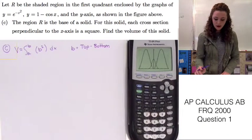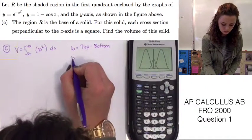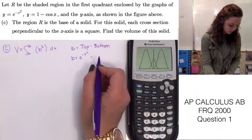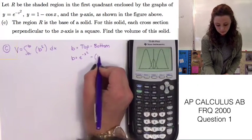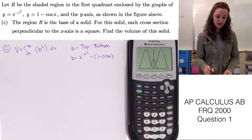By looking at the graph, we can see that the top is, again, e to the negative x squared. So B is going to be e to the negative x squared. And the bottom function will be 1 minus cosine x. So we can plug this back in.